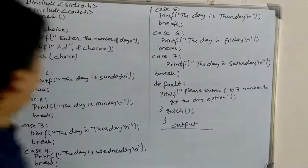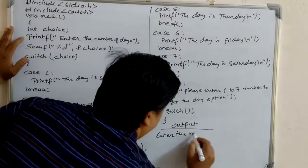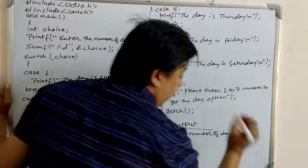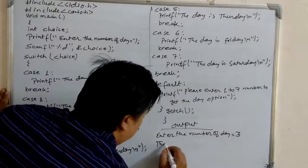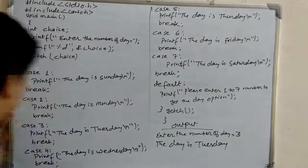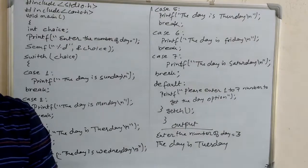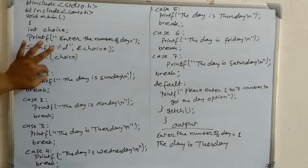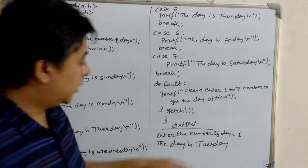Now for the output: when you compile and run this program, first it displays 'Enter the number of day'. If you enter 3 from the keyboard, it looks for the case 3 constant, and since it matches, it displays 'The day is Tuesday'. If you enter 1, it is matched with case constant 1, so it prints 'The day is Sunday'. After that there is a break statement, so it comes out of the switch case.